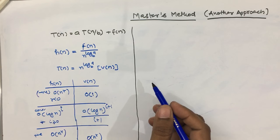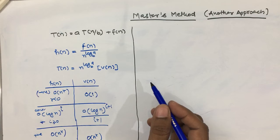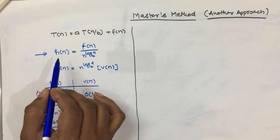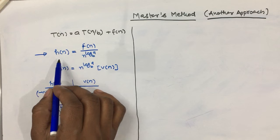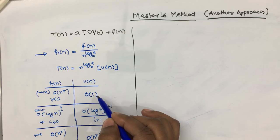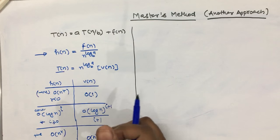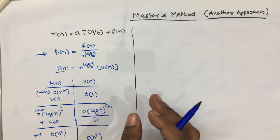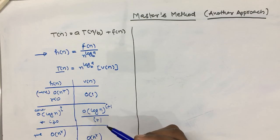In this video we will learn another approach to solving the Master Method. We formulate the three cases of the Master Method in a table, and based on this table you can find the time complexity of any recurrence relation solvable by the Master Method. We have divided the Master Method into calculating two intermediate functions, h and v, and we are not required to memorize all the cases.